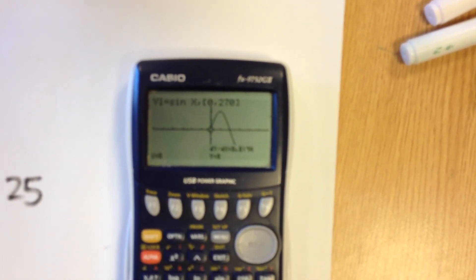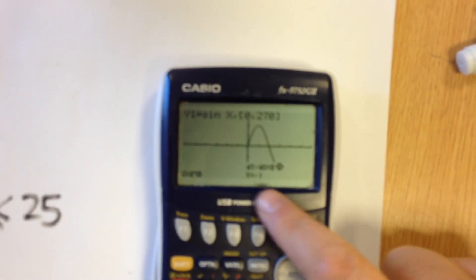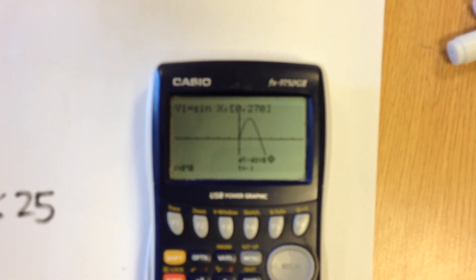So all I have to do to do that is trace, and then 270, and then we can see that the minimum point is there, and the minimum value is minus 1.